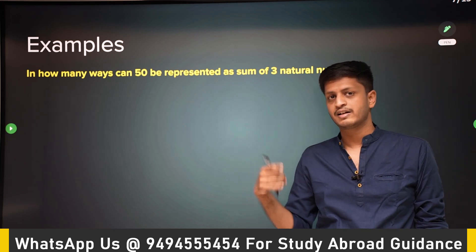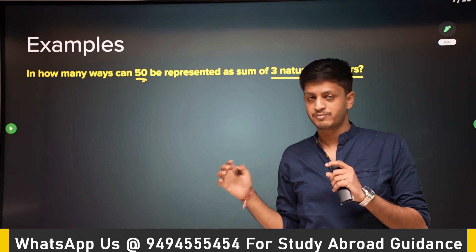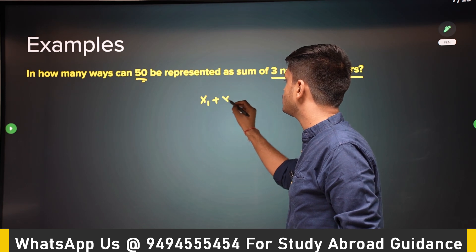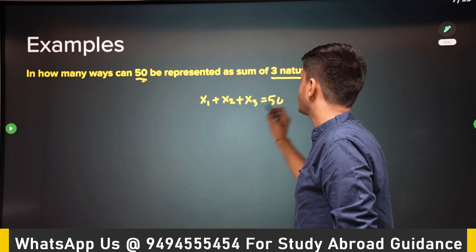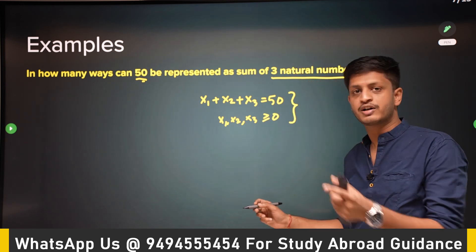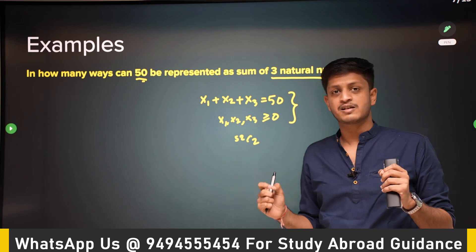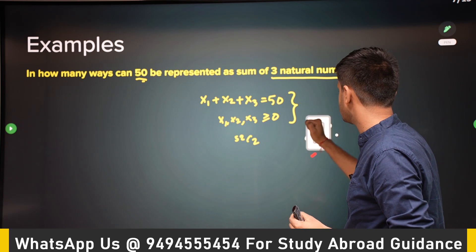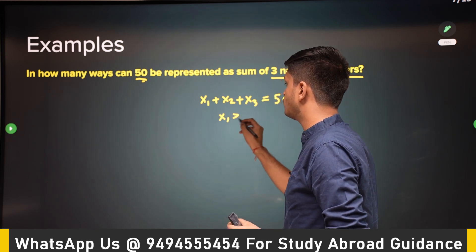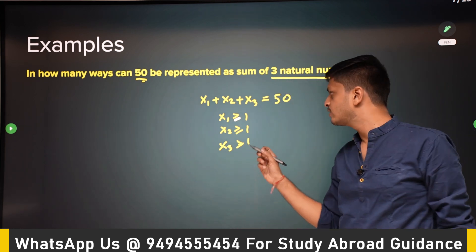This was a homework problem: in how many ways can 50 be represented as a sum of three natural numbers? We already solved it for whole numbers where x1+x2+x3=50 with all variables ≥ 0, giving 52 C 2. But now the problem is slightly different — natural numbers are greater than or equal to one, so x1 ≥ 1, x2 ≥ 1, and x3 ≥ 1.